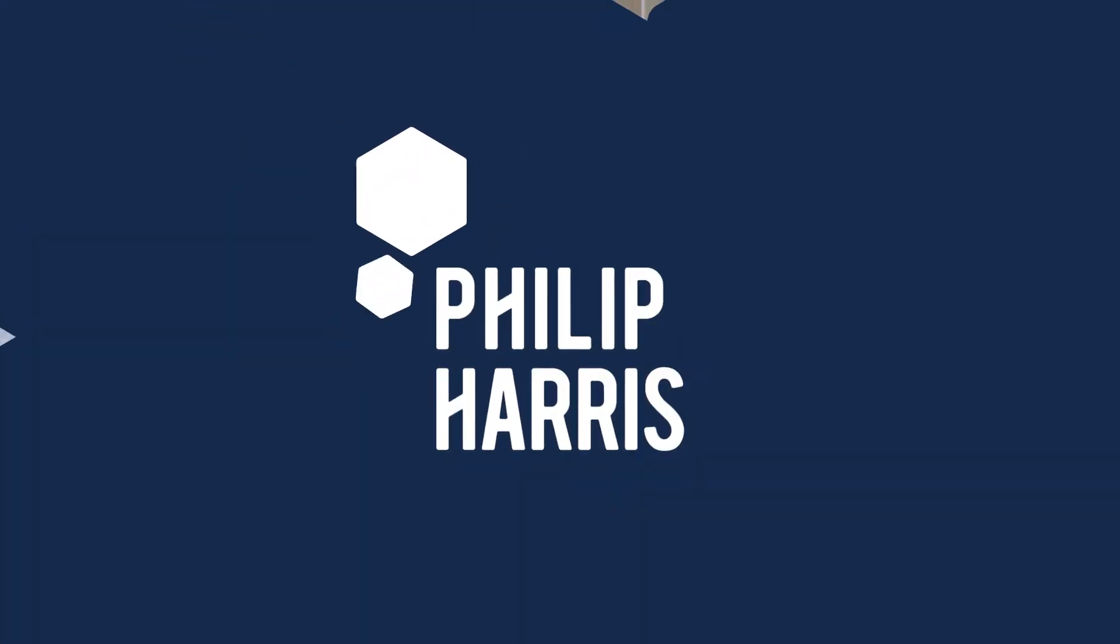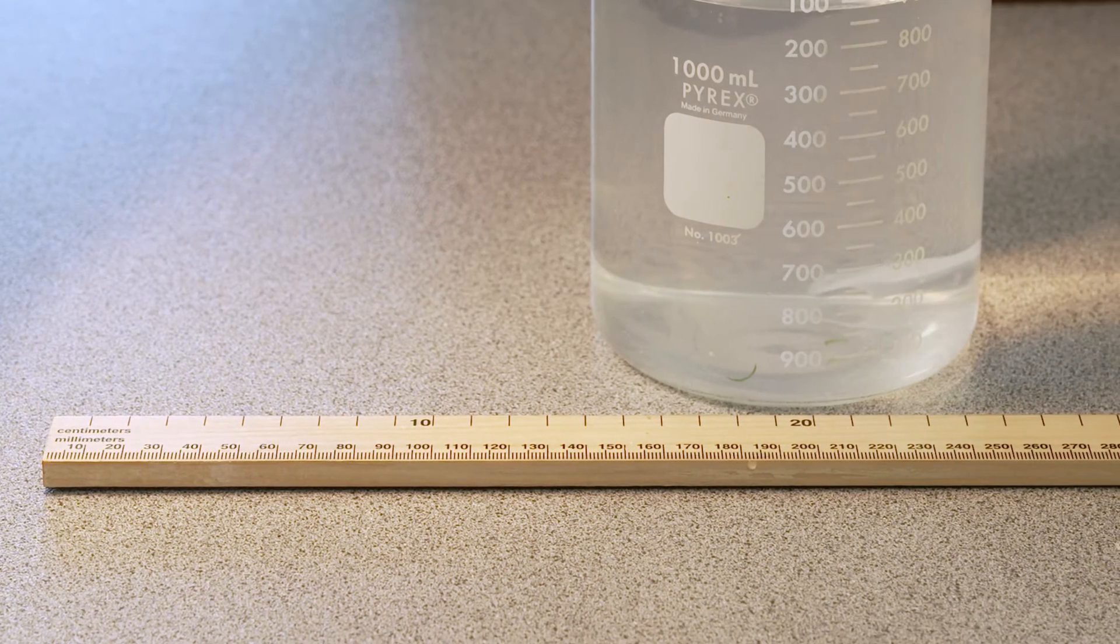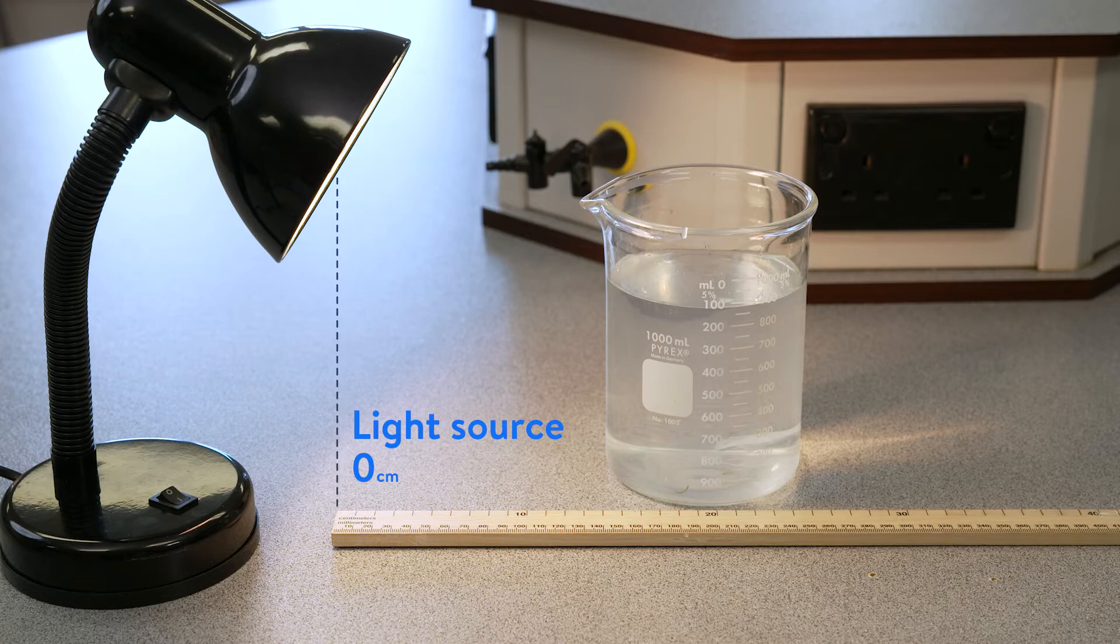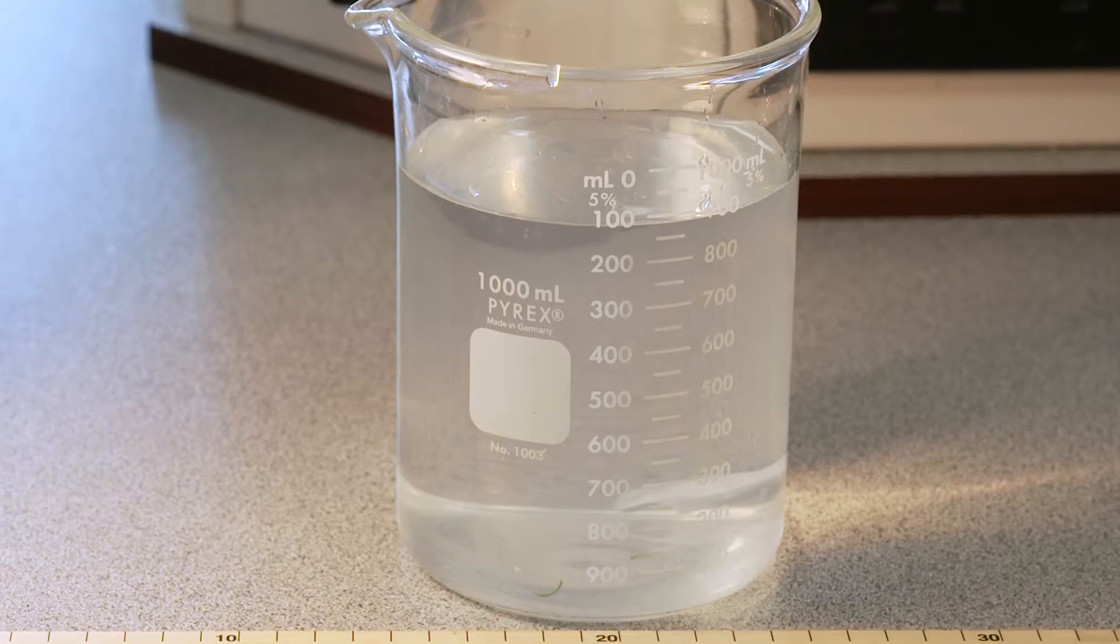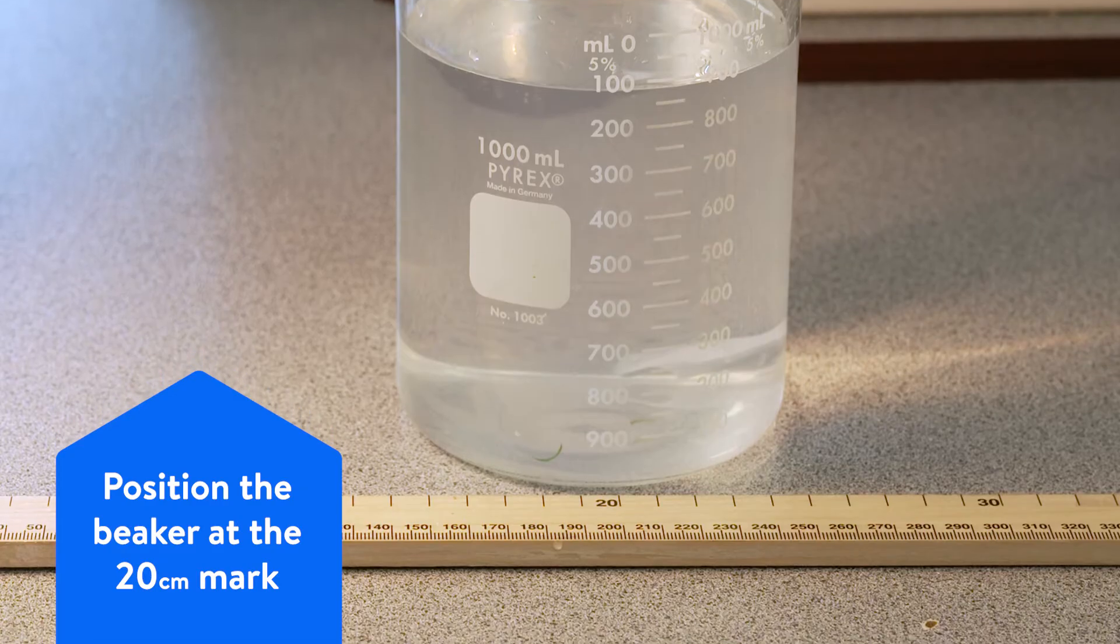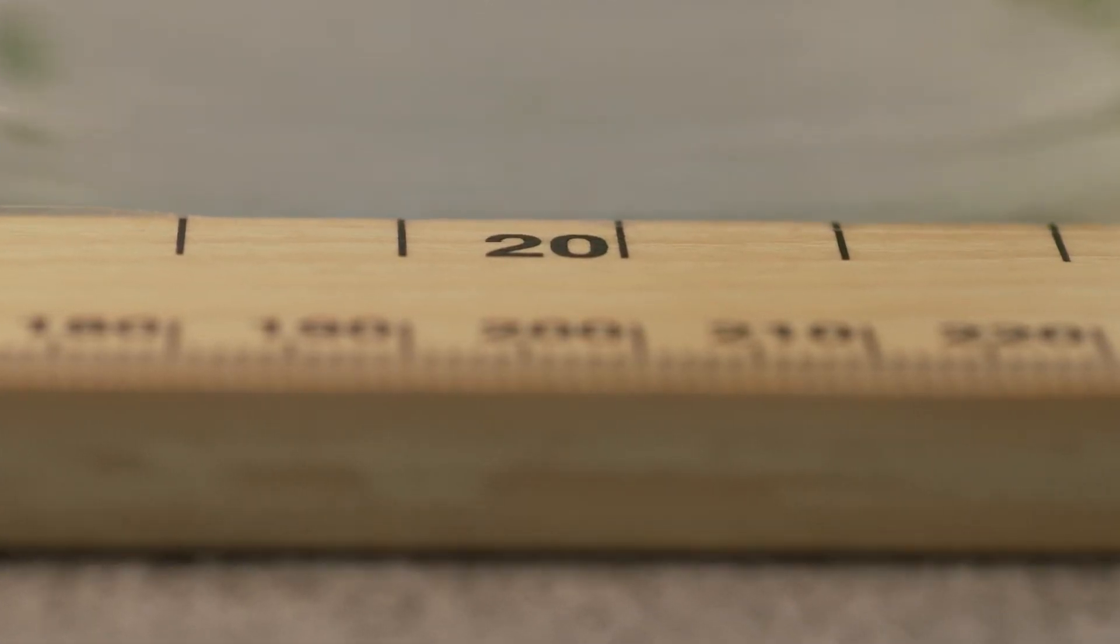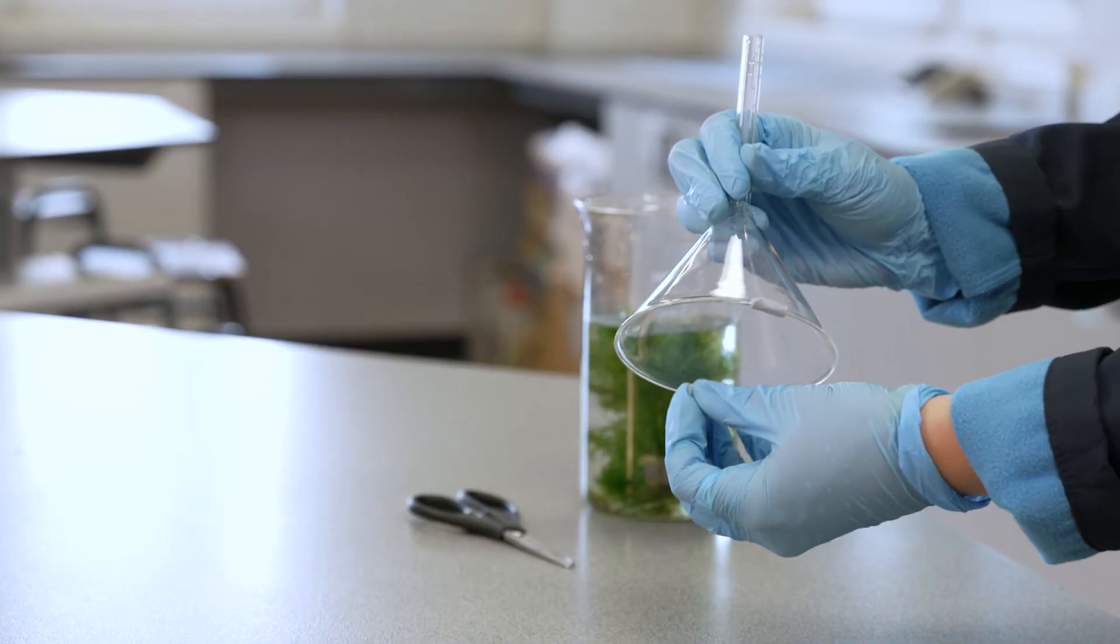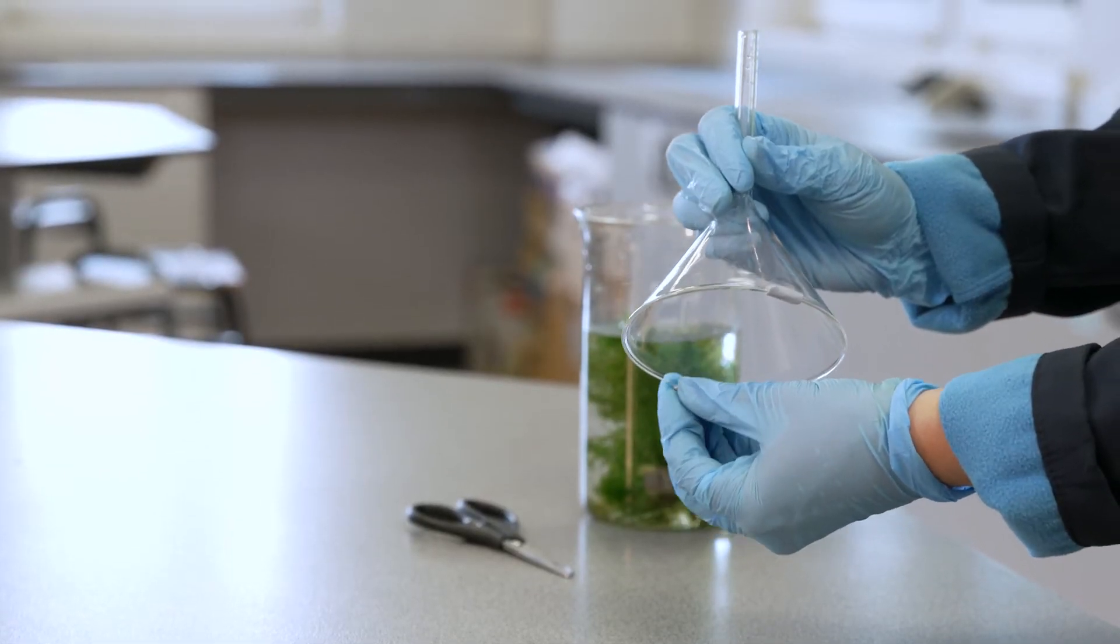To set up the experiment, place the ruler on the bench and set up the light source at the zero centimeter end of the ruler. Place the beaker of water at the 20 centimeter mark on the ruler. Now put two pieces of blue tack onto the rim of the filter funnel. This will help keep the funnel raised off the bottom of the beaker.